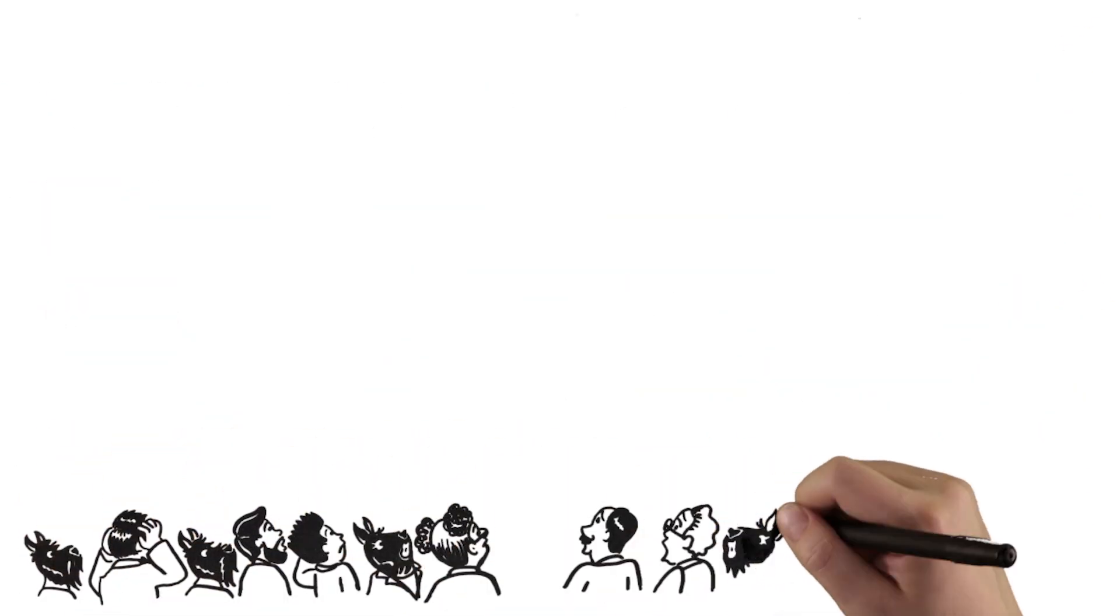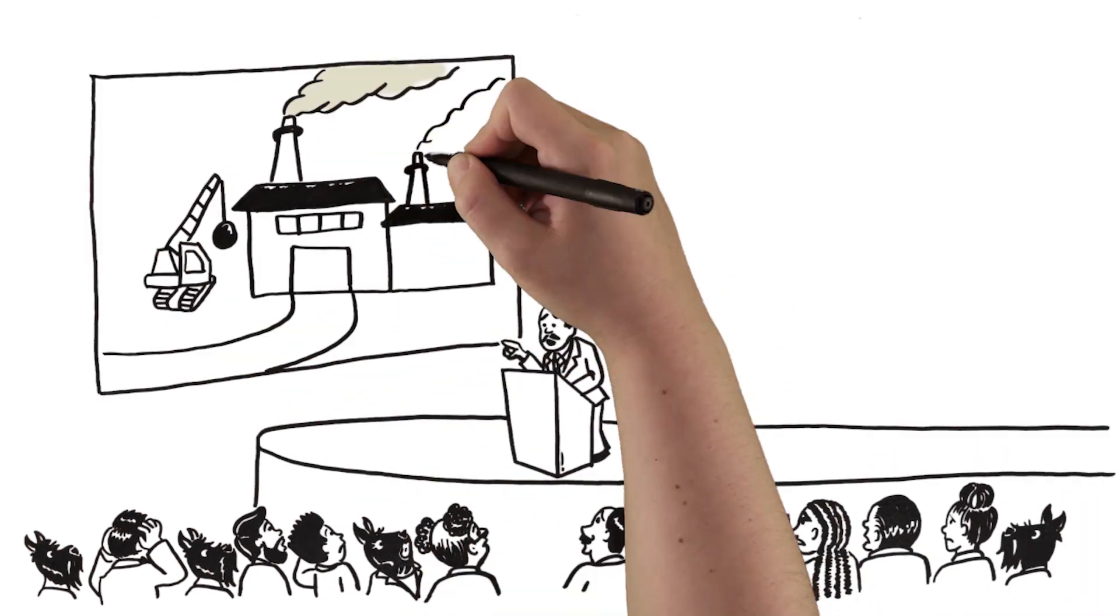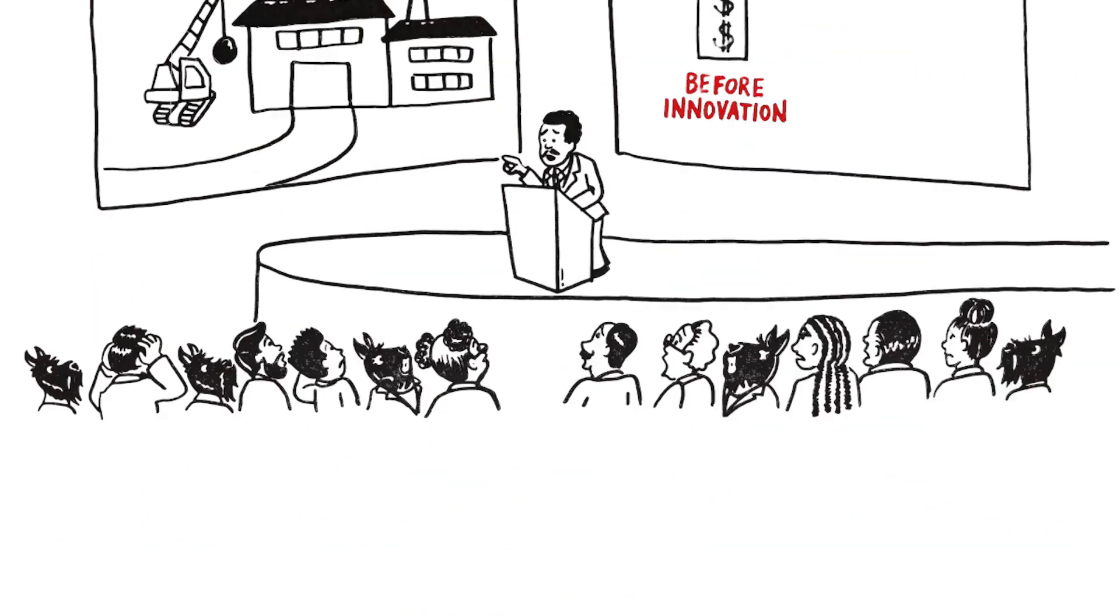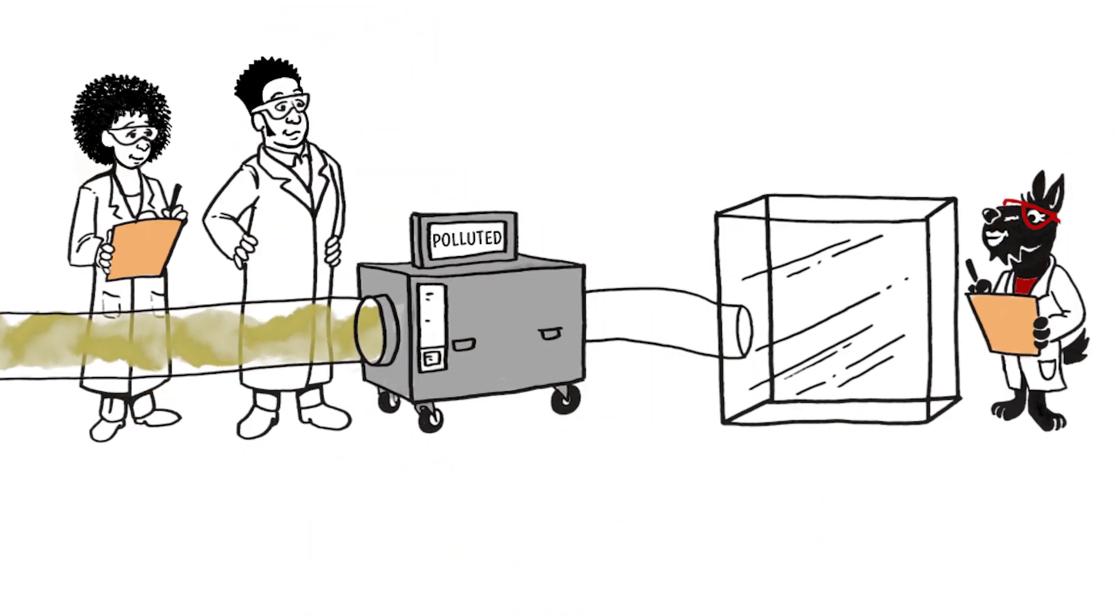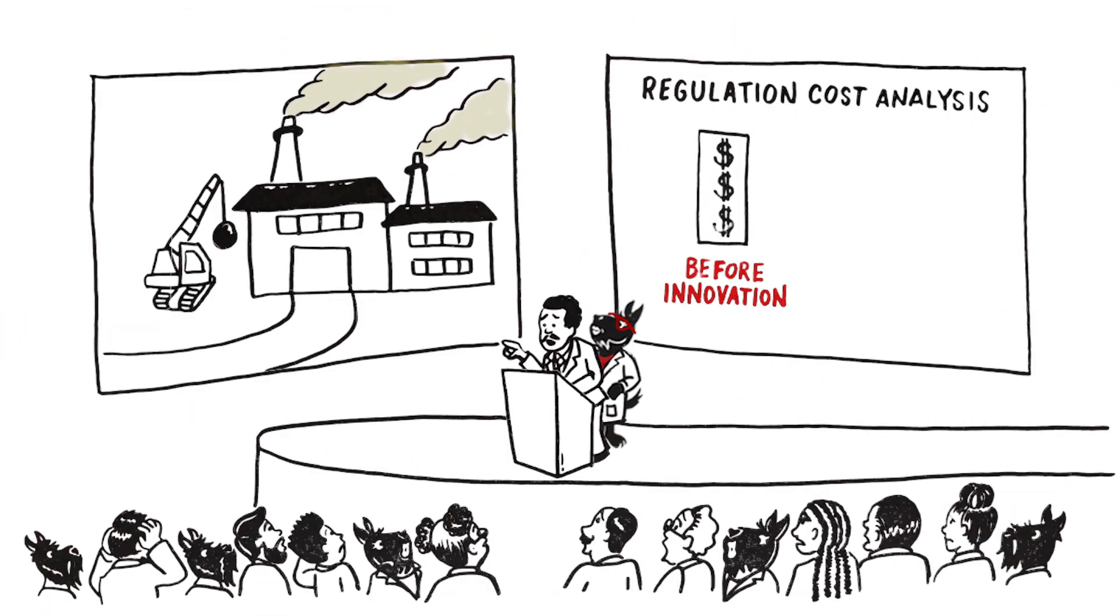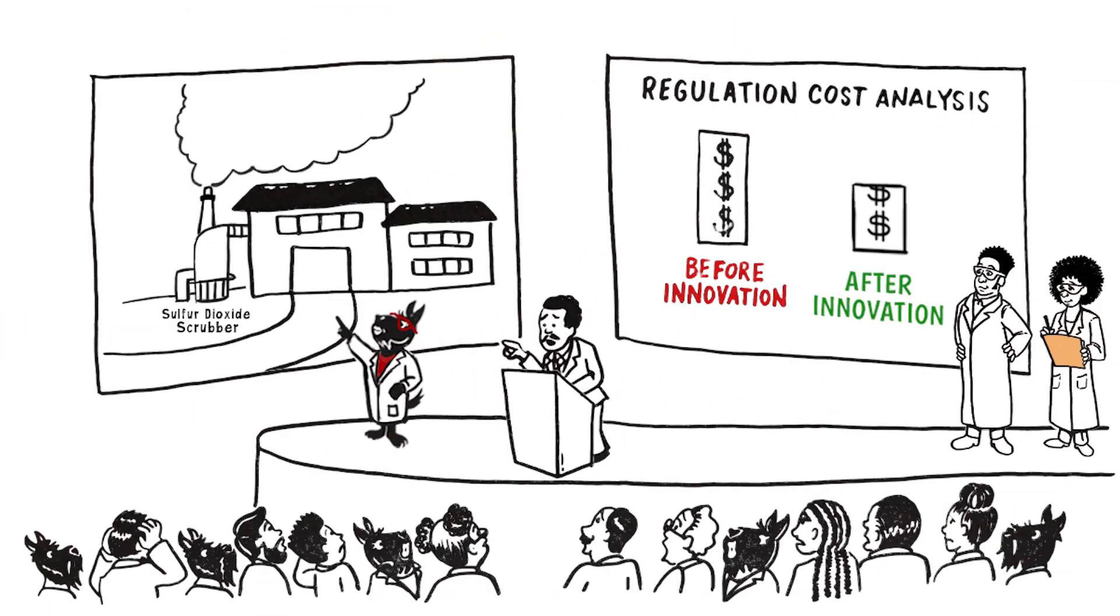For example, back in the 1970s, power companies thought that cleaning up air pollution would put them out of business. But instead, it turned out that innovative manufacturers working in partnership with the Environmental Protection Agency were able to invent pollution control devices called scrubbers that cut the cost of compliance in half.